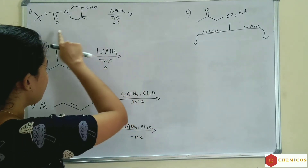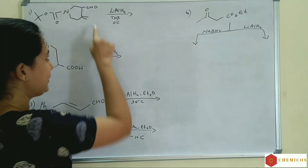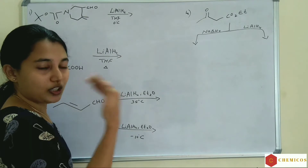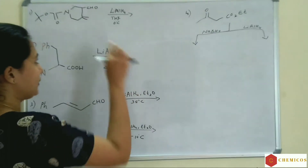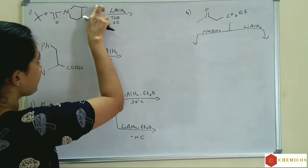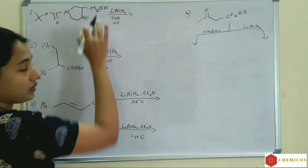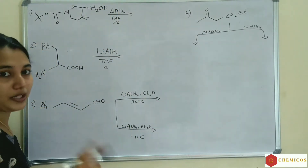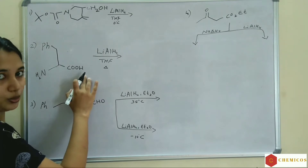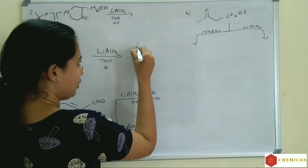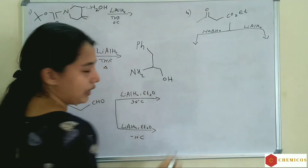First example: when lithium aluminum hydride is added to a compound containing an aldehyde group, the aldehyde group is reduced to alcohol. CHO is converted to CH₂OH — a primary alcohol. In the second example, a COOH acid group is reduced by lithium aluminum hydride to alcohol, so COOH is converted to alcohol.